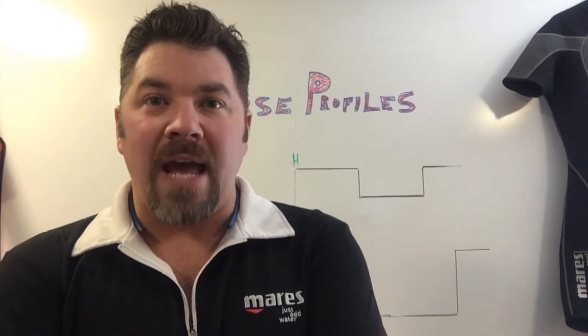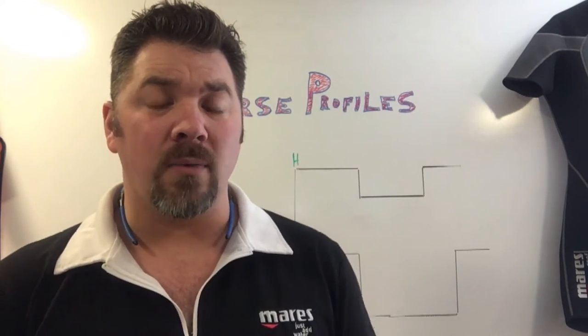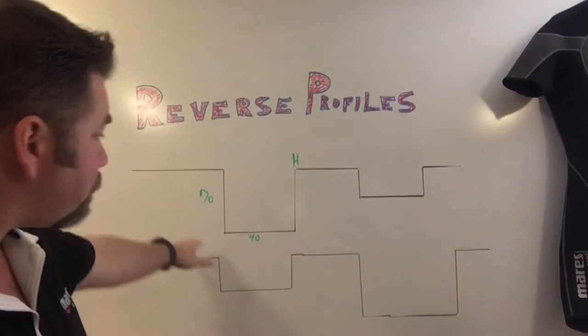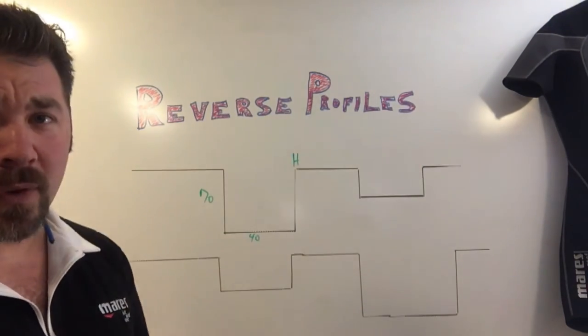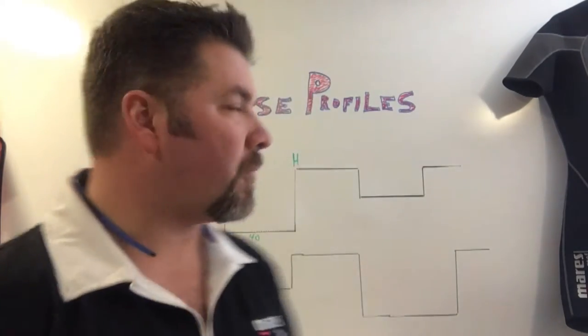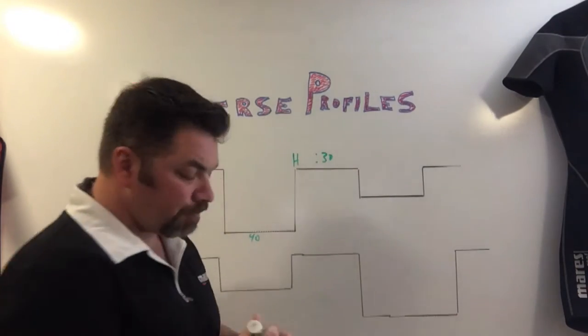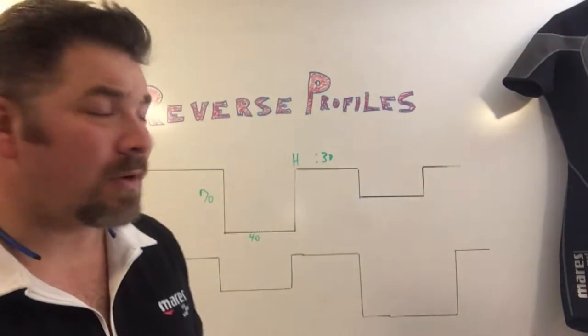If you're using PADI, NAUI, SDI, or TDI tables, your numbers will be slightly different — your pressure group letter values may differ from mine. If you have SSI charts, you can follow right along. But really, it doesn't matter which tables you pick — at the end of it, the conclusions are going to work out the same. So at 70 feet for 40 minutes, I'm an H diver. I'm going to use a realistic surface interval — on the East Coast and Gulf Coast, by the time you get out of the water, change tanks, and move to another dive site, you're going to spend about 30 minutes before you get back in the water.